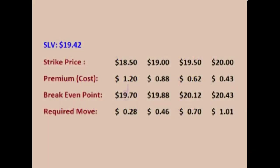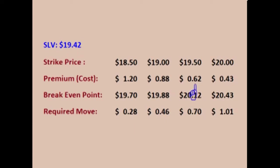Looking at all four strikes: the $18.50 strike has the highest up-front cost of $1.20 per share, yet SLV only needs to move $0.28 for the trade to be profitable. The $19.00 strike costs $0.88, but SLV must move more. The $19.50 strike costs even less at $0.62, but SLV has to move even more. And the $20.00 strike costs the least at $0.43, but SLV must move the most for the trade to be profitable.